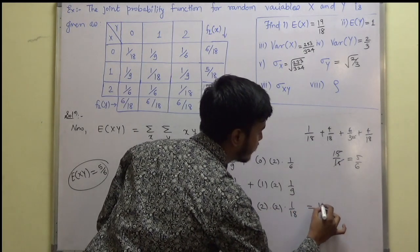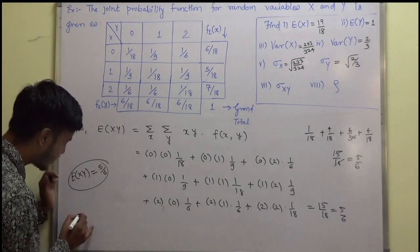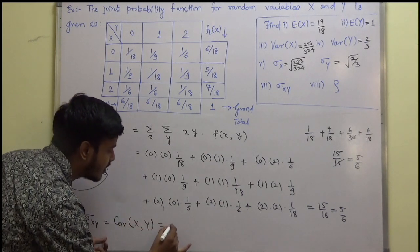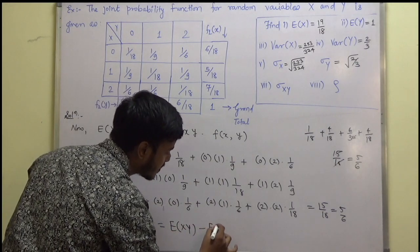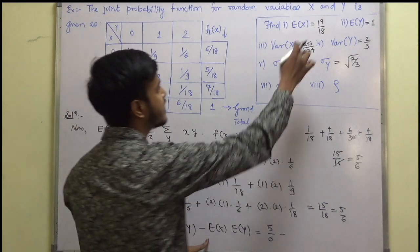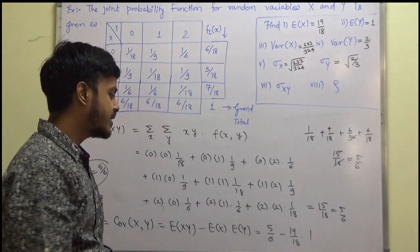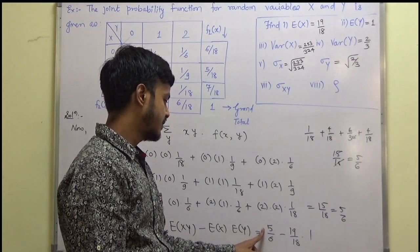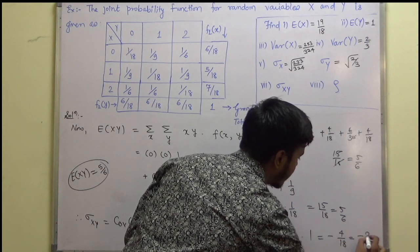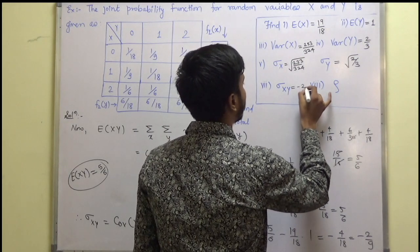Now we can find covariance. Covariance of x and y, denoted sigma_xy, equals expectation of xy minus expectation of x times expectation of y. That is 5 by 6 minus (19 by 18) times 1. This comes out to be minus 4 by 18, or minus 2 by 9. So covariance of x and y is minus 2 by 9.